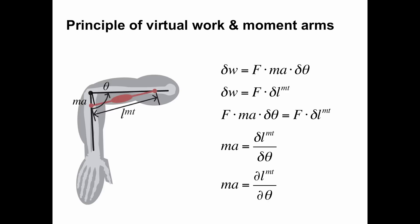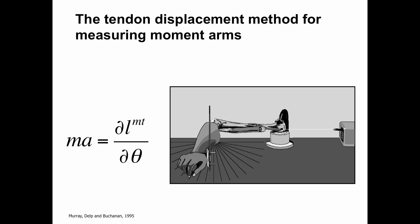So moment arm defined as the perpendicular distance from joint center to muscle path is equal to dL/dθ. In biomechanics we've gone through this derivation because it ends up being a useful way to measure muscle moment arm. That leads to what we call the tendon displacement method. If you were to take a cadaver arm — this is an arm where Wendy Murray did this measurement a couple decades ago, still experimental data being used today — you expose the biceps muscle by dissection.